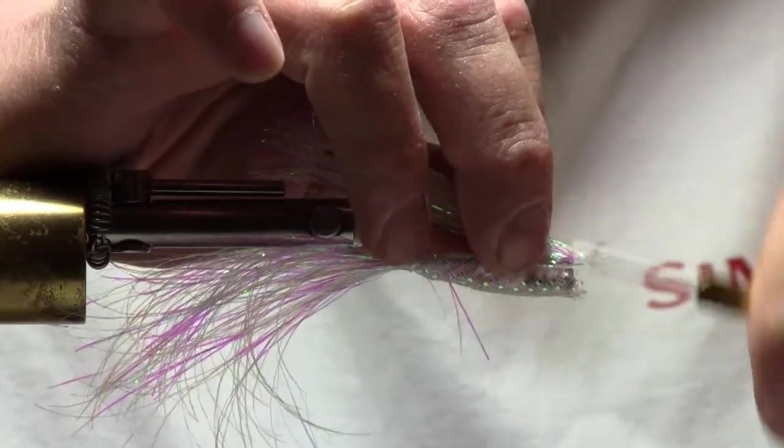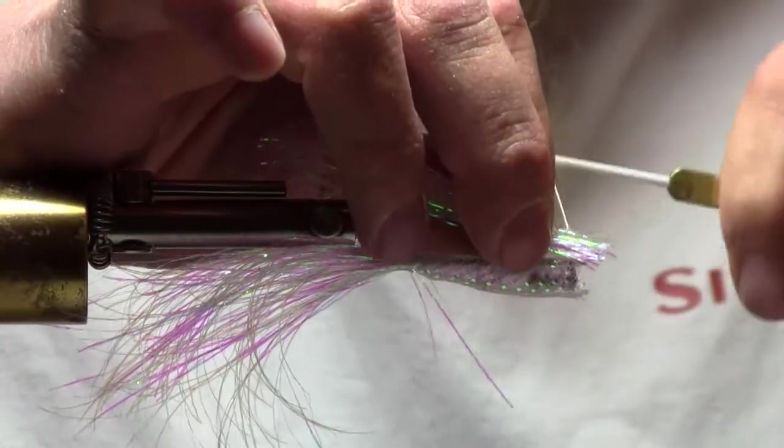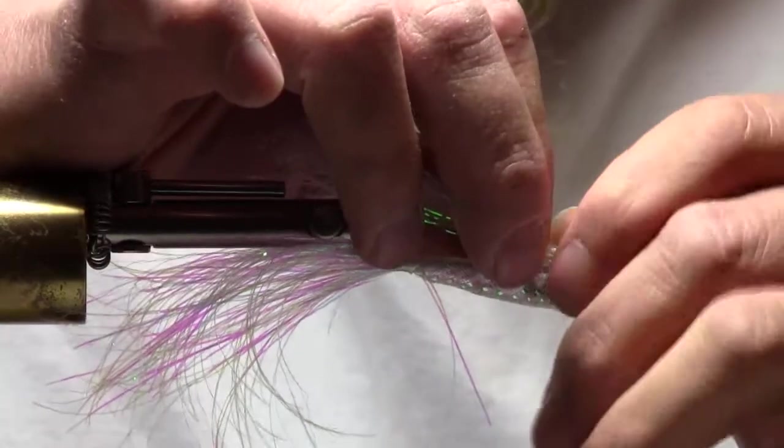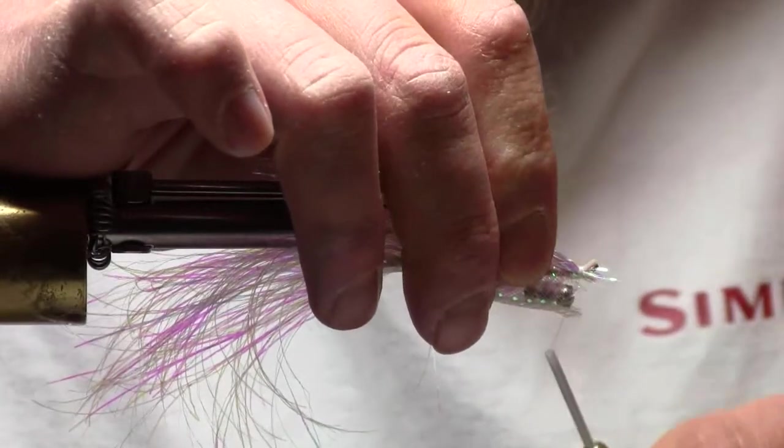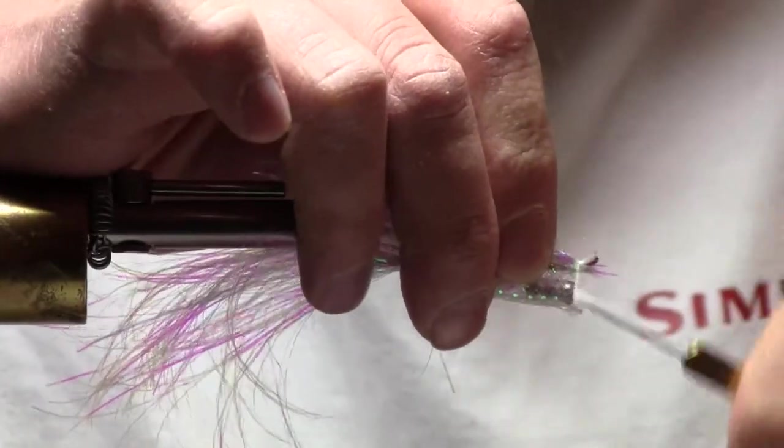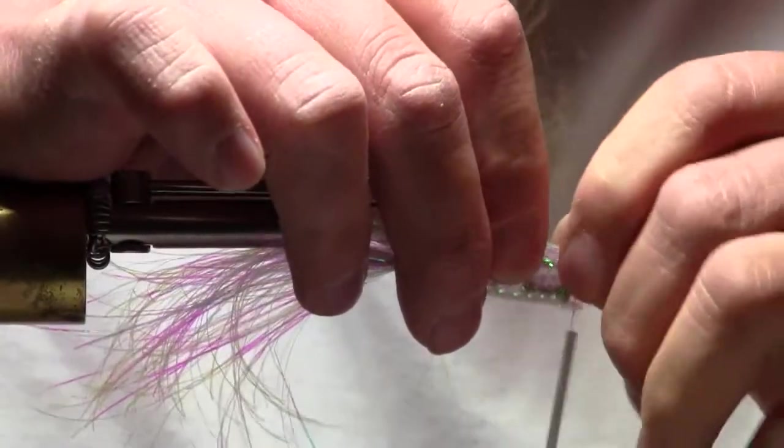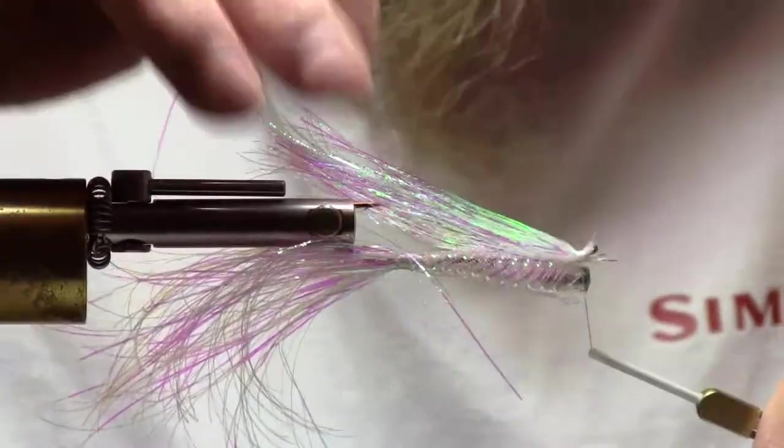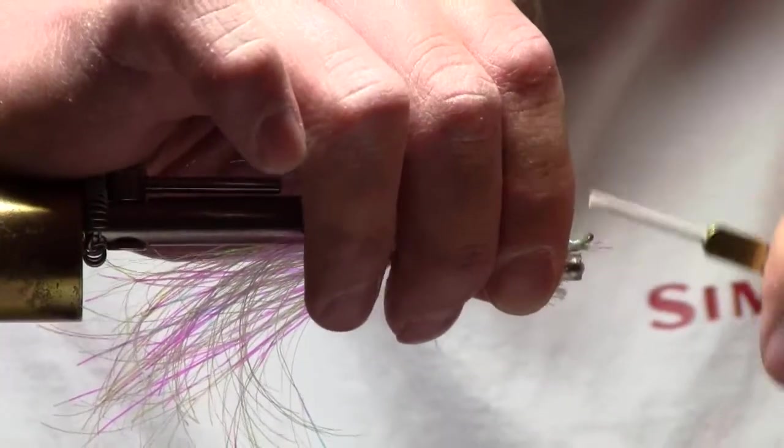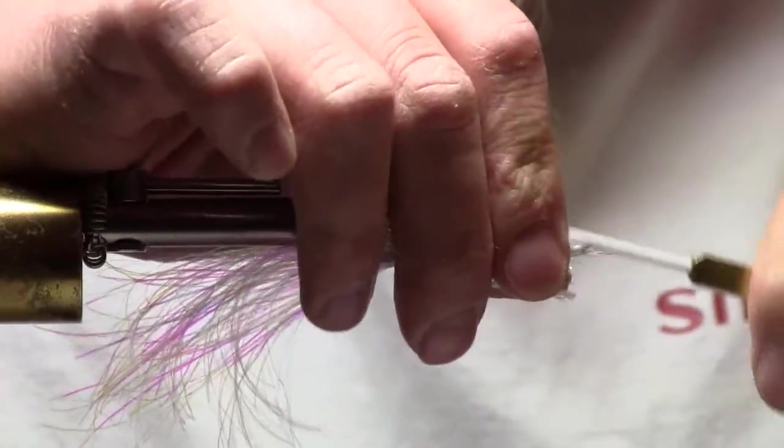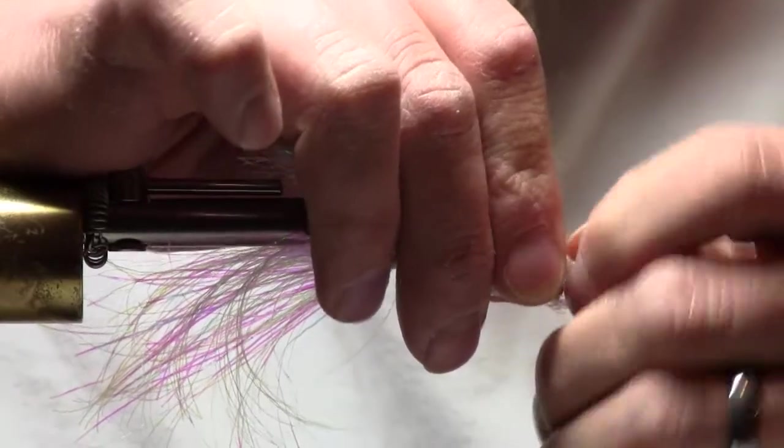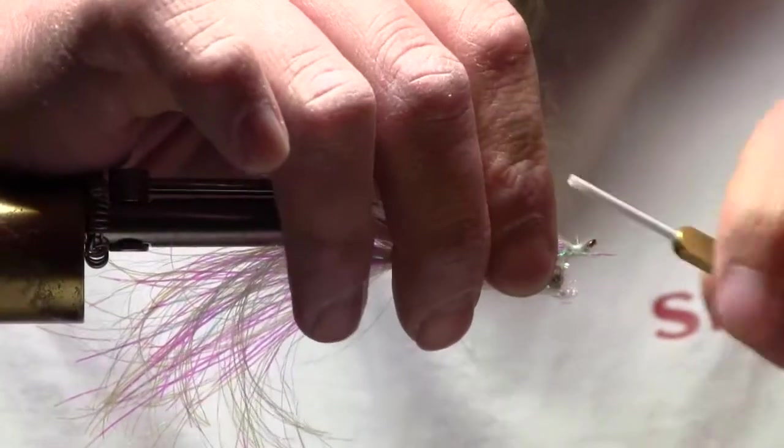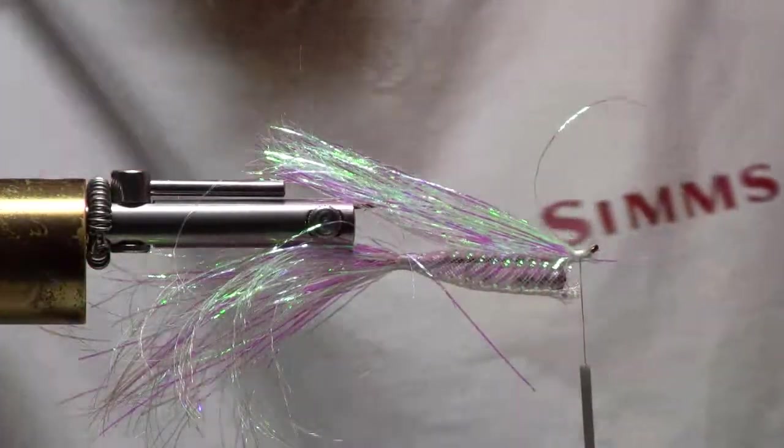A couple loose wraps to start out with. Pull back on the flash. Almost worked. And try to get it all so it rides on top. You can have it ride around the hook a little bit. Use your fingers and straighten it out. And crank down on it. That's where I'm at. Trim the excess.